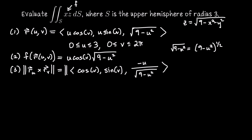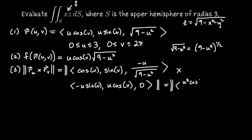The vector r_v, partial derivatives with respect to v, is: negative u sine(v), u cosine(v), and 0. Taking the cross product of r_u and r_v, the first coordinate is u² cos(v) divided by √(9 − u²), the second coordinate is u² sin(v) divided by √(9 − u²), and the third coordinate is u cos²(v) minus negative u sin²(v), which is u cos²(v) + u sin²(v) = u.